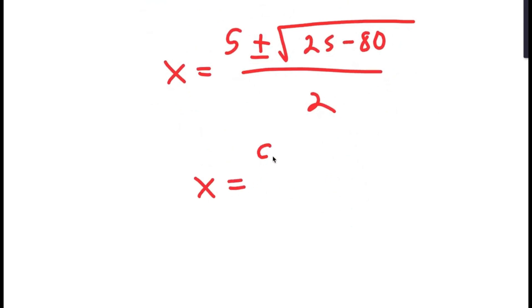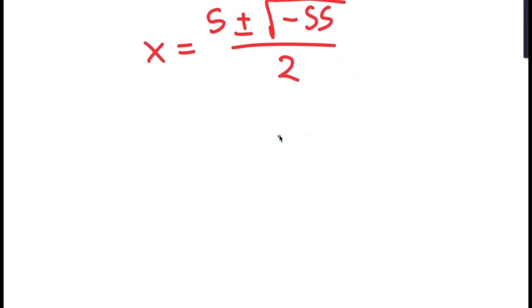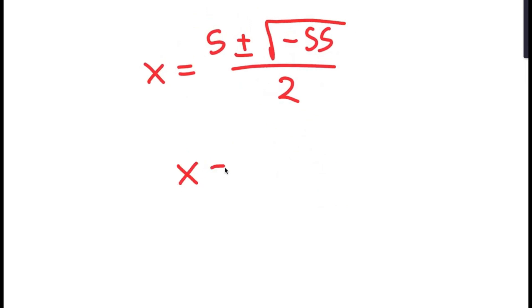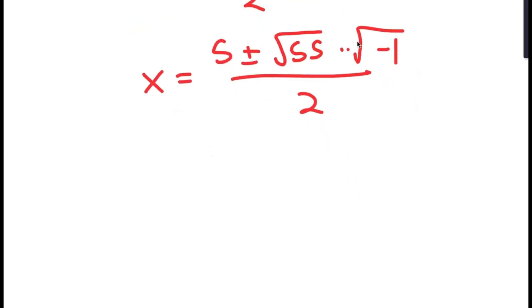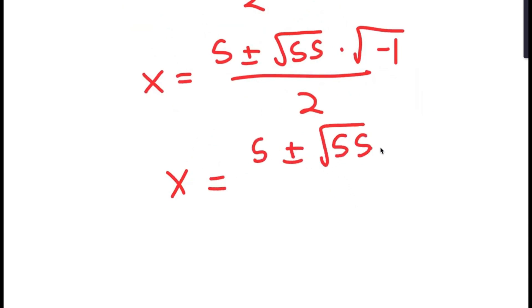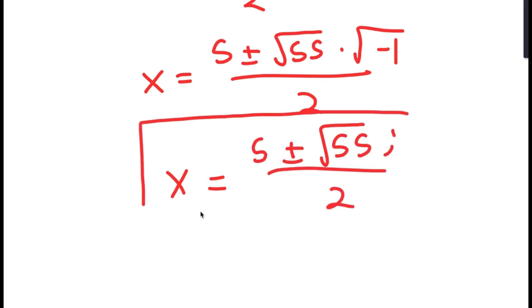This is equal to 5 plus or minus the square root of 25 minus 80 over 2, which is equal to 5 plus or minus the square root of negative 55 over 2. This equals 5 plus or minus the square root of 55 times the square root of negative 1, over 2. Since the square root of negative 1 is the imaginary number i, I get 5 plus or minus the square root of 55 times i, over 2. So these are two more solutions to this equation.